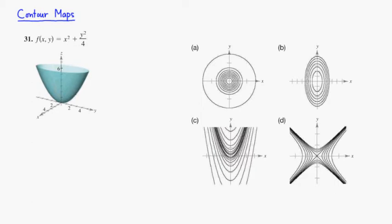Let's look at this example, number 31. The function is f equals x squared plus y squared over 4. So let's try to look at the intersection with the plane z equals 1.